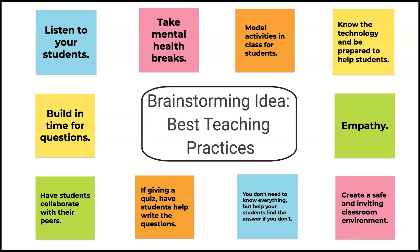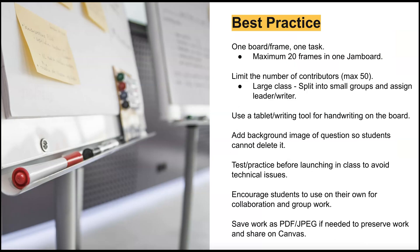This example shows how Jamboard can be used for class brainstorming. Small groups of students can perform a brainstorm around a topic or centralized question, and individual students can also perform their own brainstorm to submit. Users can use one Jamboard for multiple tasks — a single Jamboard can have up to 20 frames and hold up to 50 collaborators at one time. If there are more than 50 students, consider breaking students up into smaller groups with their own Jamboard. Always practice using Jamboard before deploying the activity to avoid technical issues, and encourage students to use it for both collaborative and individual work.